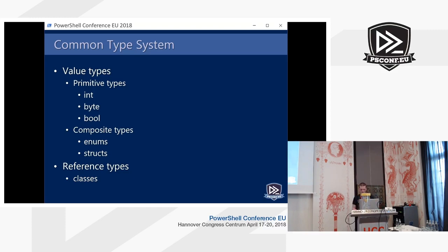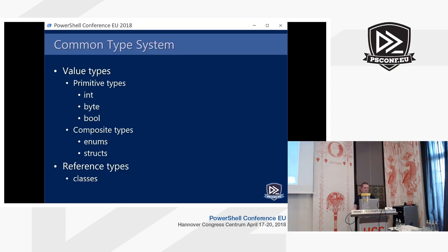Structs are a little bit like classes, but the difference is that we call them value types rather than reference types. When you assign a value type to a new variable, it gets copied to that variable — instead of creating a new reference to the same object in the CLR, we create a copy. So a command like get-date returns an object of type DateTime, which is a struct. When you do get-date and assign it to $date and then to a bunch of other variables, it gets copied every time. You can modify one variable and the others will be untouched even though they all came from a single call to get-date.